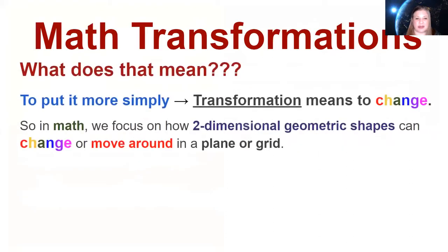So what does that mean? Well we can put it a little more simply. Transformation means to change. So in math we focus on how two-dimensional geometric shapes can change or move around in a planar grid. Your two-dimensional shape before any change has occurred is called the pre-image and then after the transformations have been applied you get the image and that's your ending point.